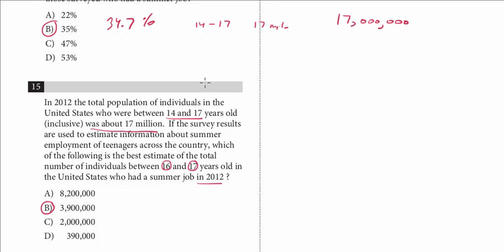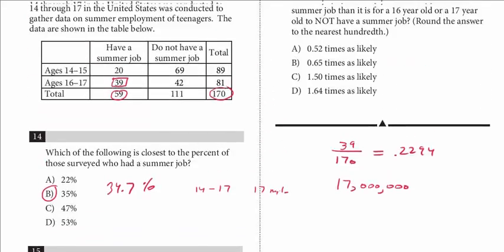So hopefully that made sense. We were using the ratio of the sample to now extrapolate that and find what the actual number is based on the total number of all individuals, all teenagers between 14 and 17. And one last point about this question, there's actually a shortcut. You always want to look for these, especially in the math, because a lot of students have trouble with the time constraint.